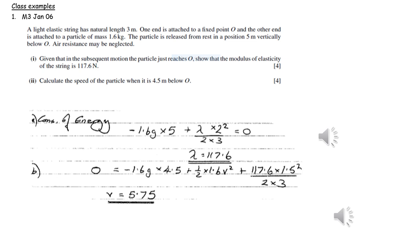In part two, we are again applying conservation of mechanical energy, comparing it to the position of O, and that's why there is a zero on the left-hand side of the equation. On the right-hand side, we have the kinetic energy when it's four and a half metres below O, the gravitational potential energy — again negative since it's below our zero PE level — and the elastic potential energy found using λx² over 2l. From this equation, we obtain the value of V.